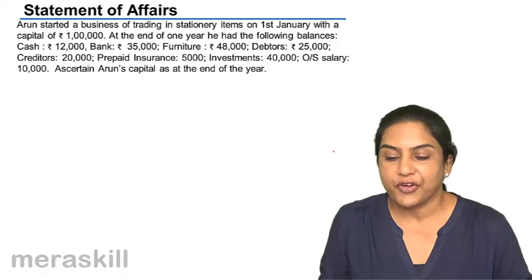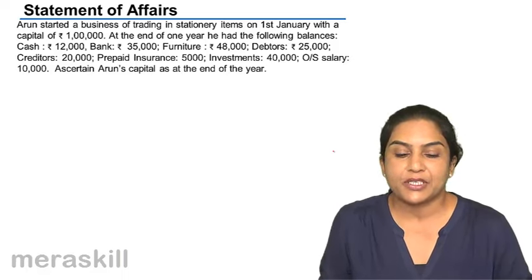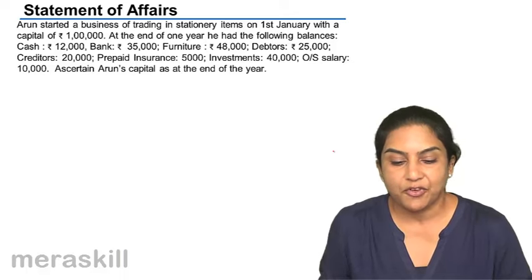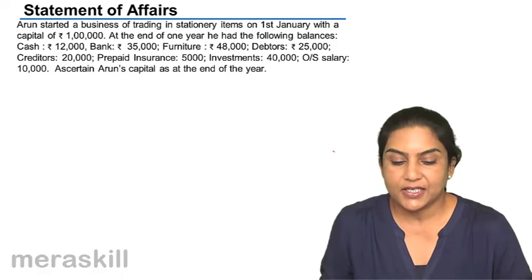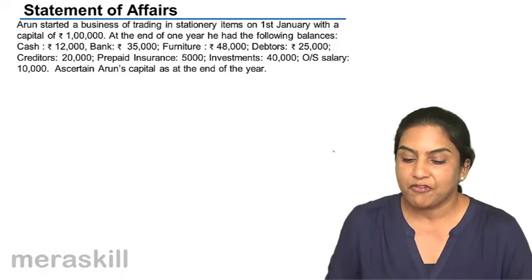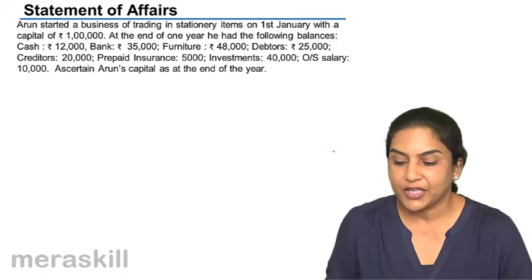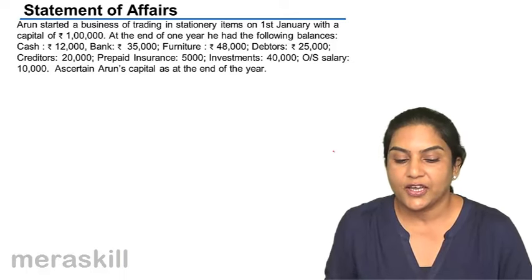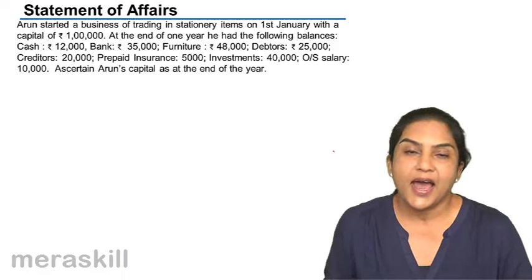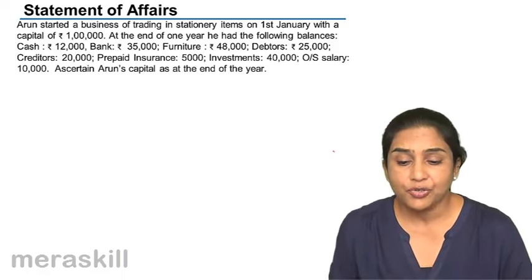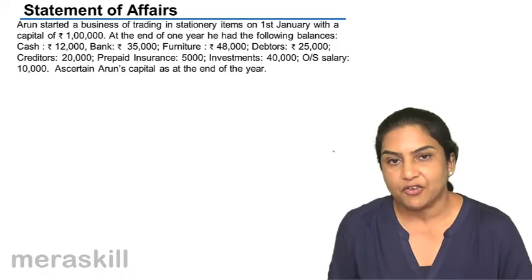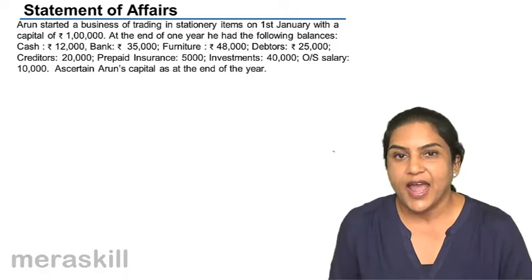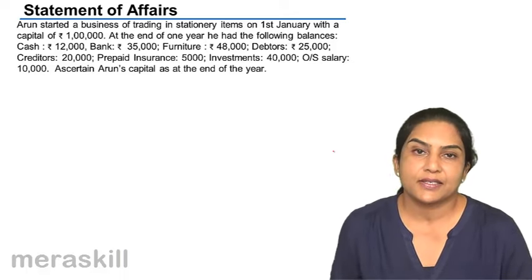Arun started a business of trading in stationery items on 1st January with a capital of 1,00,000. At the end of the year, he had the following balances: cash 12,000, bank 35,000, furniture 48,000, debtors 25,000, creditors 20,000, prepaid insurance 5,000, investments 40,000, and outstanding salary 10,000. We need to ascertain Arun's capital at the end of the year by preparing a statement of affairs — a list of assets and liabilities — where assets minus liabilities gives us the capital.